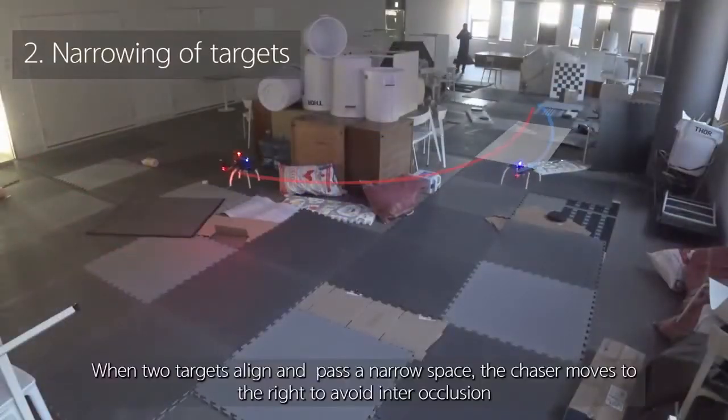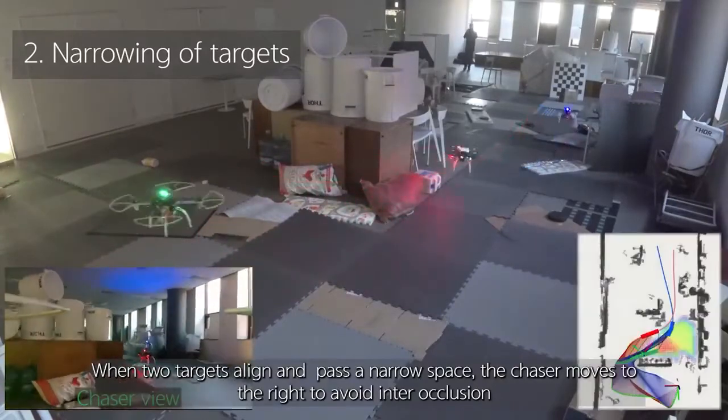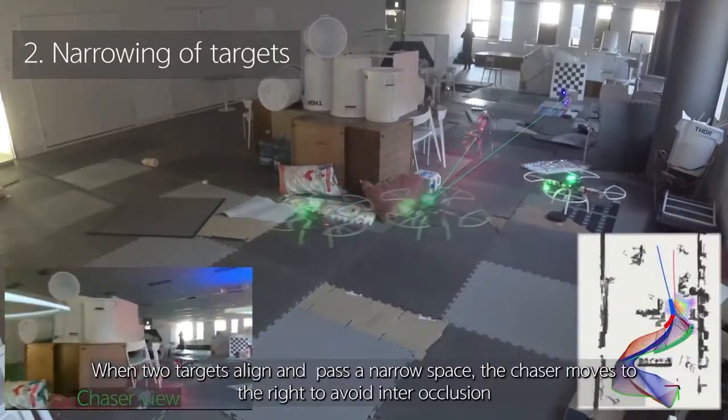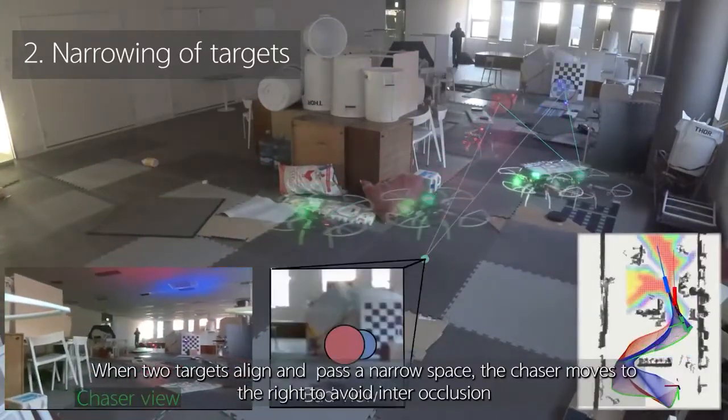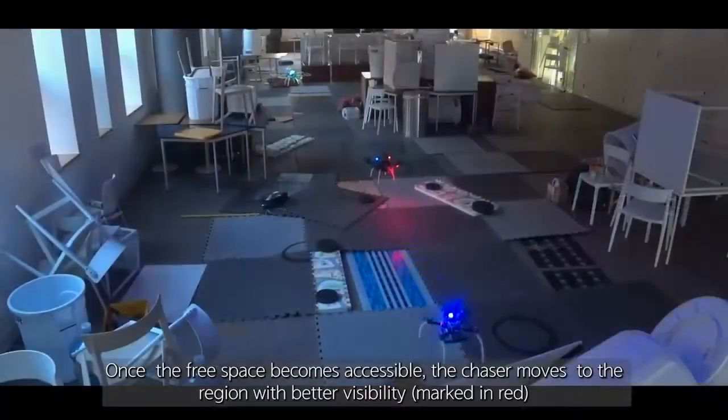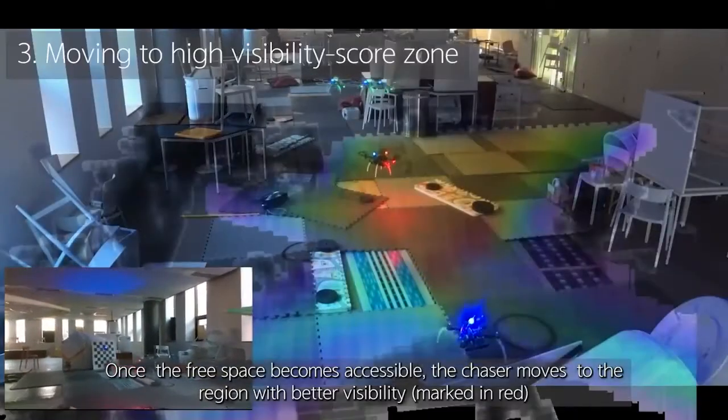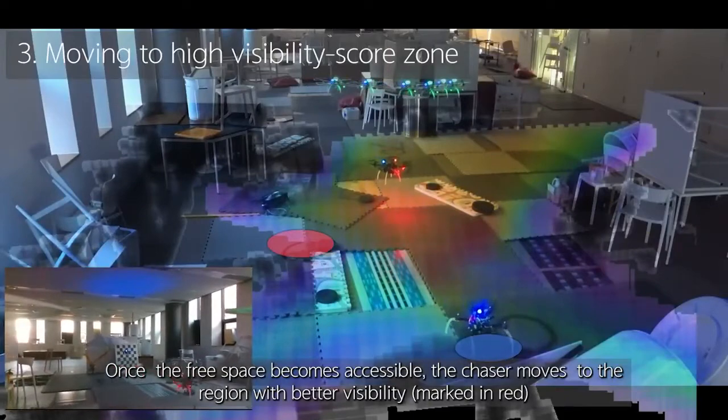When two targets align and pass a narrow space, the chaser moves to the right to avoid inter-occlusion. Once the free space becomes accessible, the chaser moves to the region with better visibility.